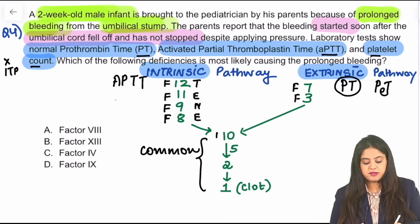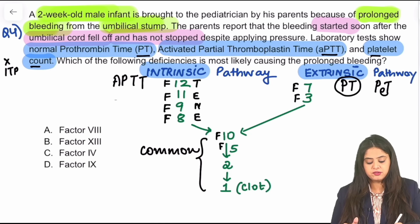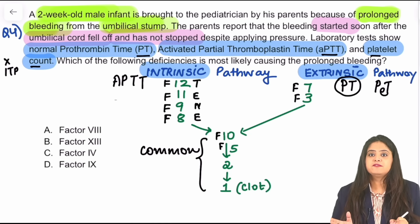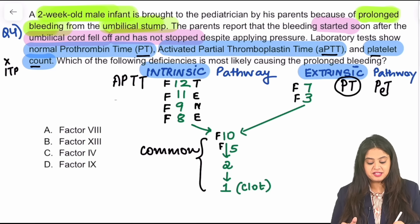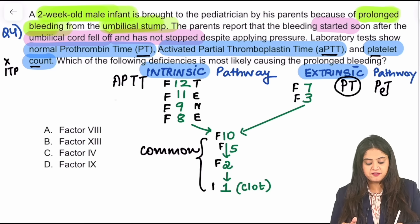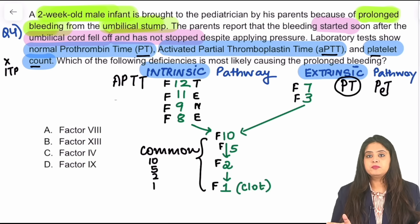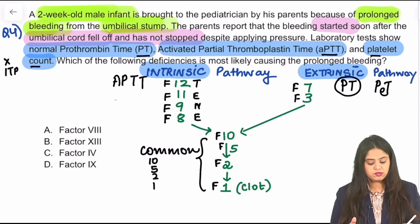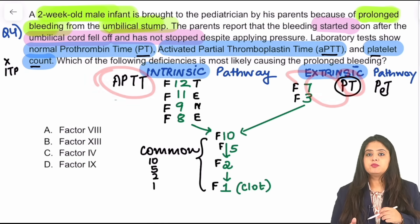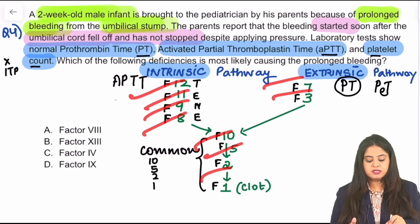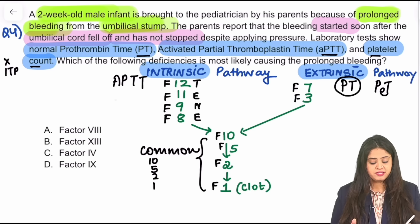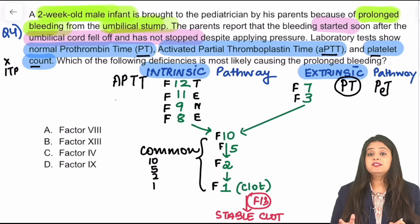In the common pathway, using the rule of half: factor 10 → factor 5 → factor 2 → factor 1 (fibrin). Factor 1 is fibrinogen/fibrin — that is the blood clot. So if PT and APTT are both normal, all these factors appear to be working fine. But the pathway doesn't end there — you also need a stable clot to form.